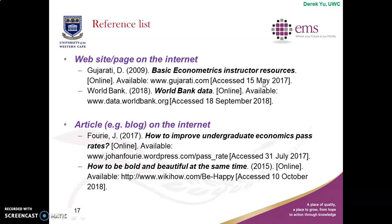Next one — maybe you use World Bank cross-sectional data, as mentioned in earlier lectures on data and literature search online. This is how you show this source in the reference list: World Bank, 2018, World Bank Data, [online], available — then the link — and then the date you went to this website to download the data.